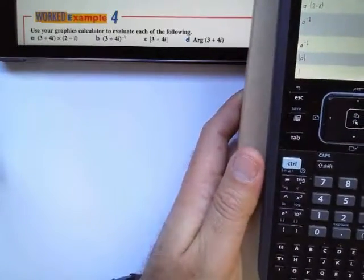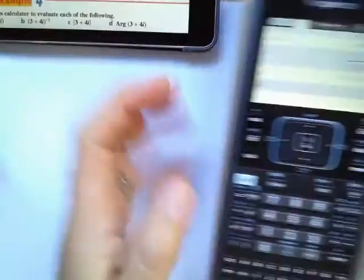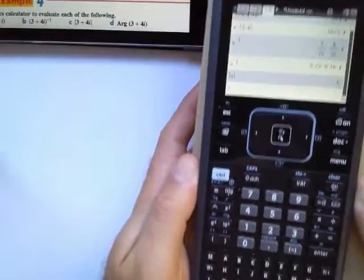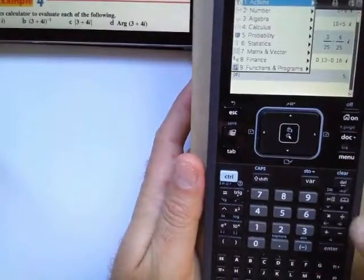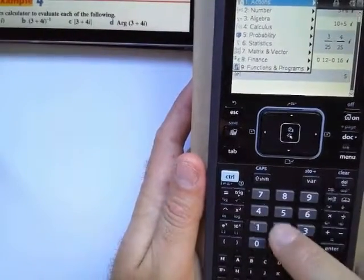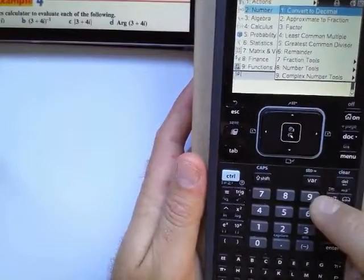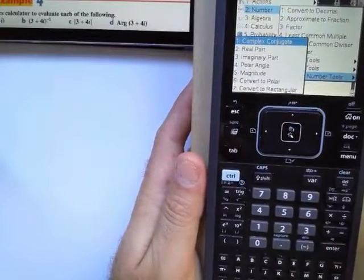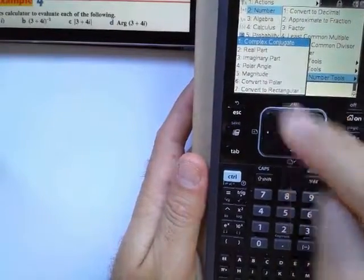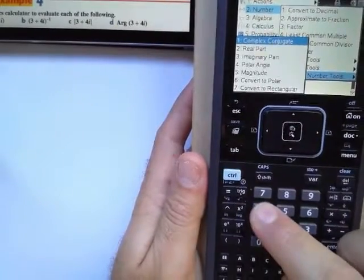The argument. Remember, argument is the angle. I'll just move this over so you can see. So to find the argument, I'm going to go again menu, 2 for number, complex number tools is 9. And I'm going to find the polar angle.